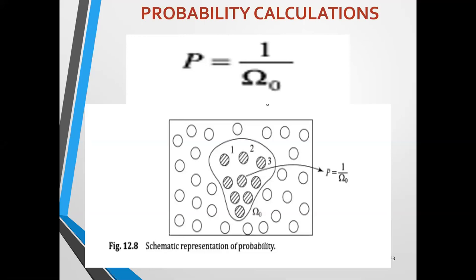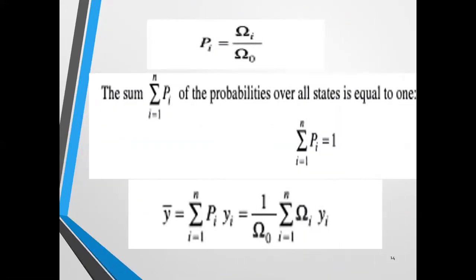Out of all states, we can number them 1, 2, 3, 4, etc. The probability of finding the system in the ith state is Ωi/Ω₀. The sum of all probabilities over all states is equal to 1. If you want to calculate the mean of a physical quantity ȳ, you multiply the probability by yi, substitute the value of Pi, and get the corresponding equation. We are simply trying to understand why we use probability, why we use phase space, what is the volume of phase space, why it is h, and how quantum mechanics seeps in.